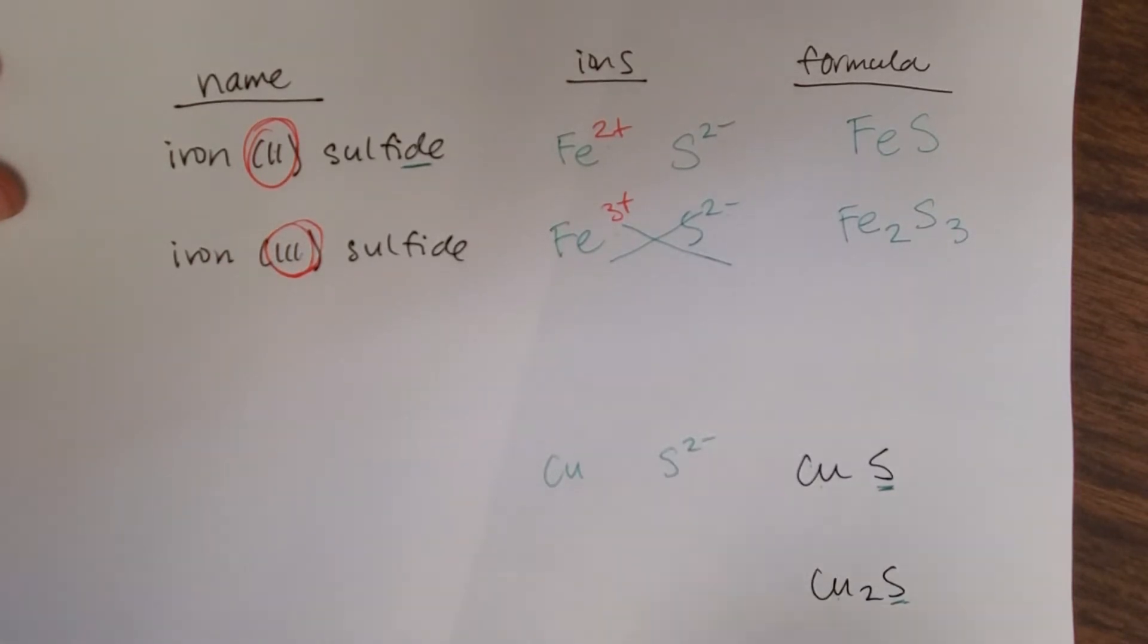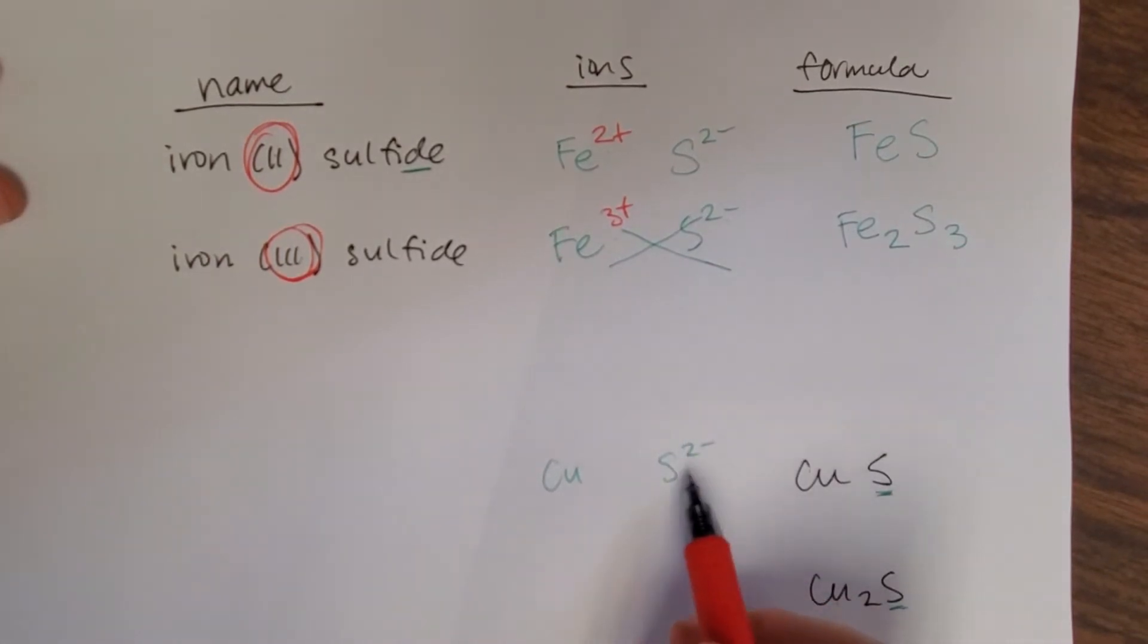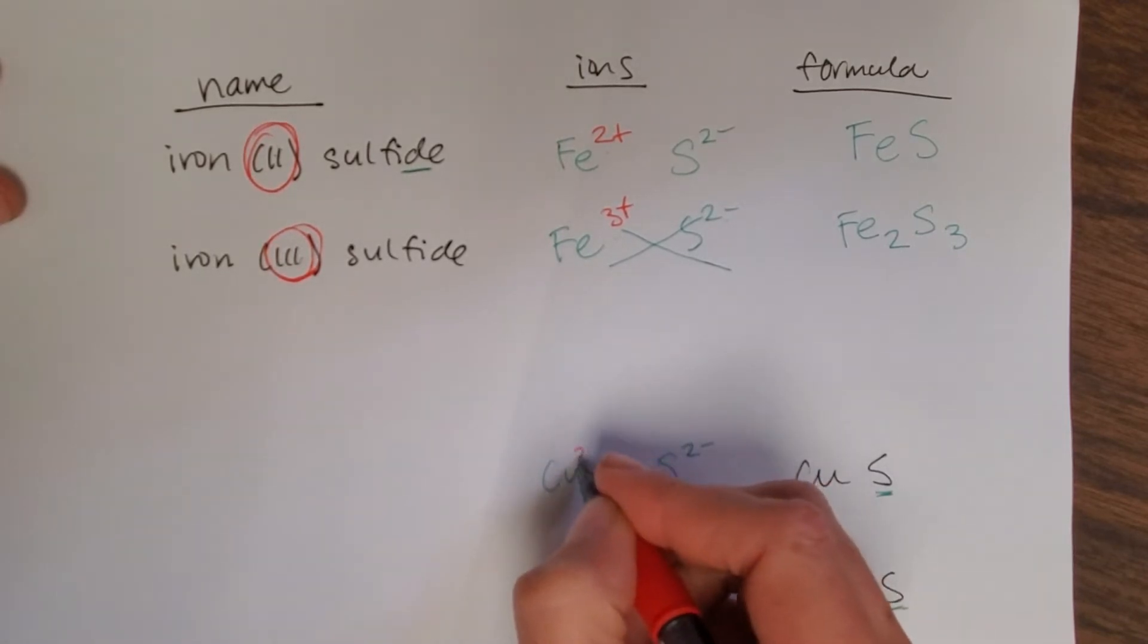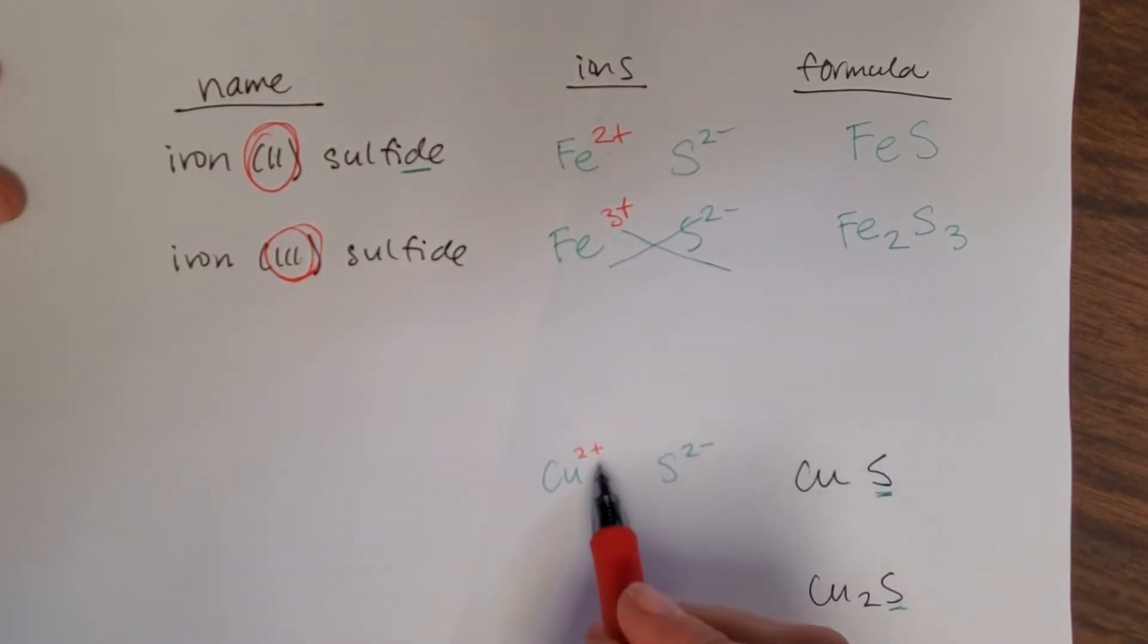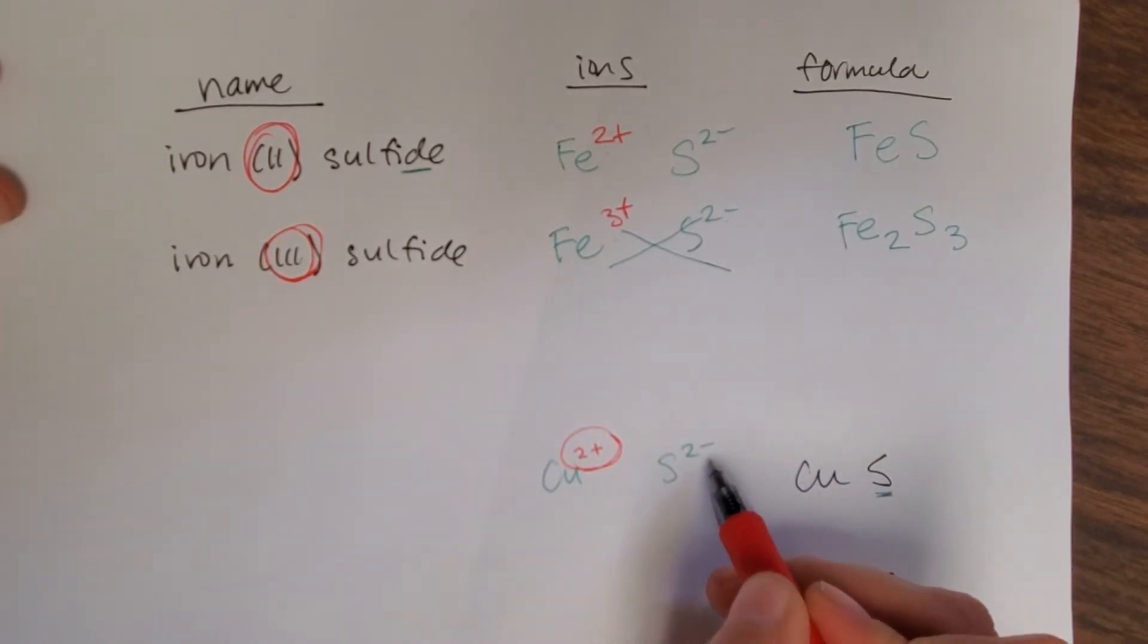If this is two negative and I have one copper, then my copper must have a 2+ charge so that this 2+ here is able to balance out this 2-.